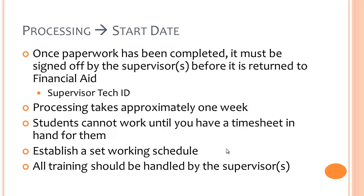Make sure that the first supervisor's signature is the supervisor who will be approving eTimesheets. Once you and your alternate supervisor have signed off on the Work Study Agreement, the student should meet with Nida or Kendra for a follow-up appointment where paperwork will be finalized and copies given to the student. We will forward the information to payroll — processing takes about one week. Students cannot work until you have a timesheet in hand. The day you get the timesheet, the student can start working. Setting their schedule and any training should be handled by the supervisor.